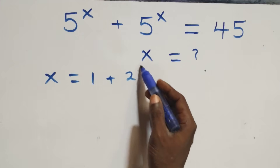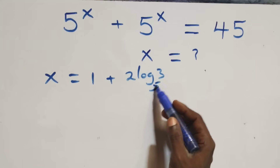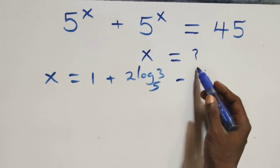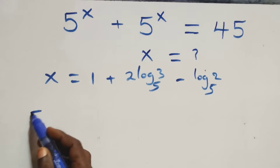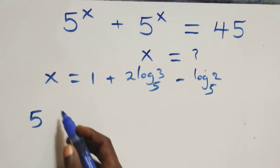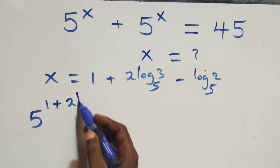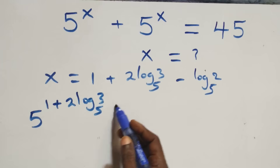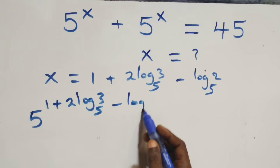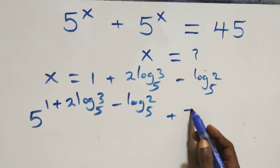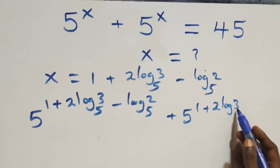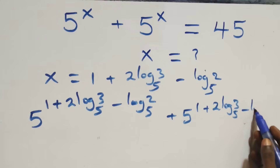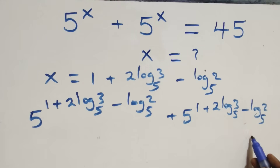Applying the change of base, we get x equals to 1 plus 2·log₅3 minus log₅2. Now to verify, we substitute back: 5 raised to power (1 plus 2·log₅3 minus log₅2) plus 5 raised to power (1 plus 2·log₅3 minus log₅2) equals to 45.